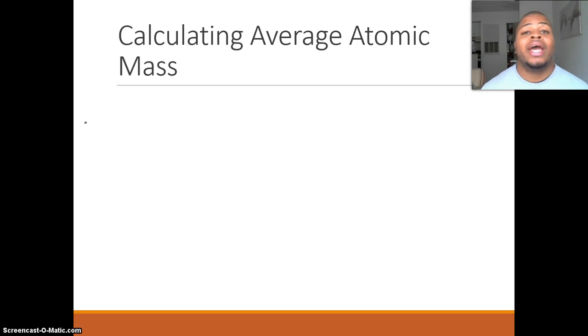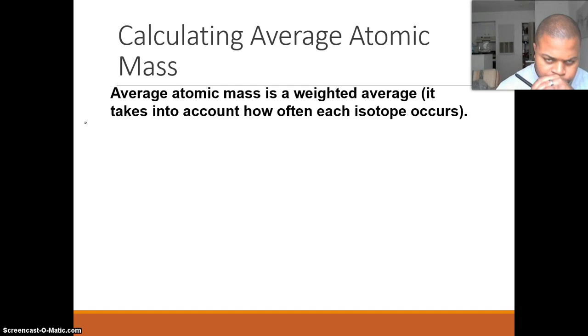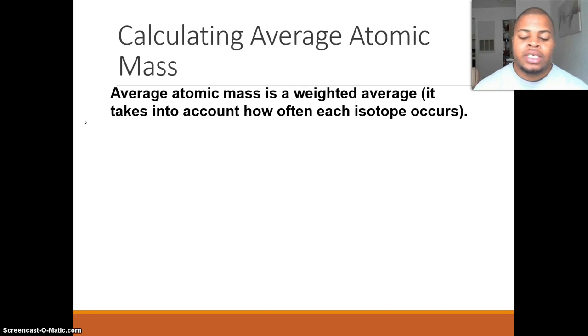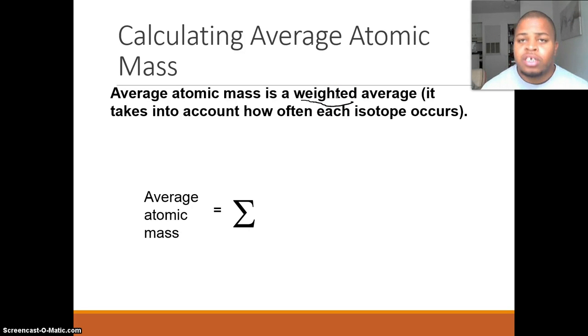Now, how do we actually calculate this average atomic mass? We're going to use this formula to figure it out. Now, you notice that it's going to be called a weighted average. Why do you think it's called a weighted average? Well, the biggest thing we have to look at is, how often does each isotope occur?